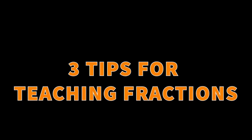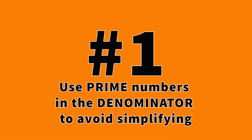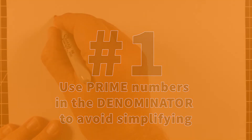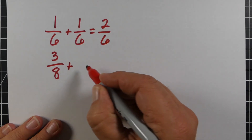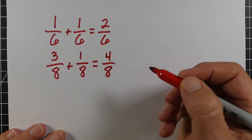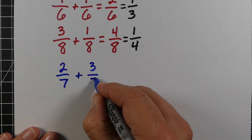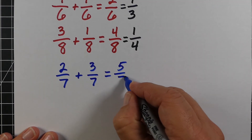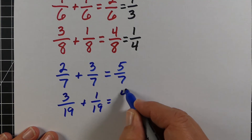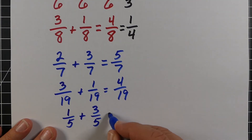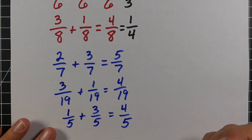Here are three tips if you're trying to teach fractions. The first tip: use prime numbers in the denominator to avoid simplifying. When you're first teaching it, you want to avoid too much confusion. For example, 1/6 plus 1/6 or 3/8 plus 1/8 gives fractions that can be simplified. If you use prime numbers like 7 — giving 5/7 — or 19, or 5 in the denominator, the fractions won't simplify. That's the nice thing about using prime numbers in the denominator.